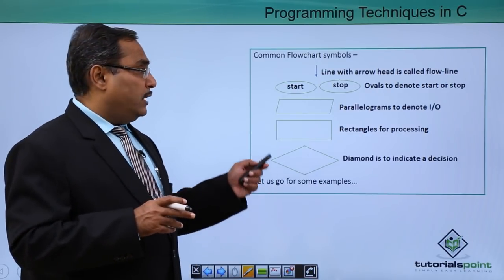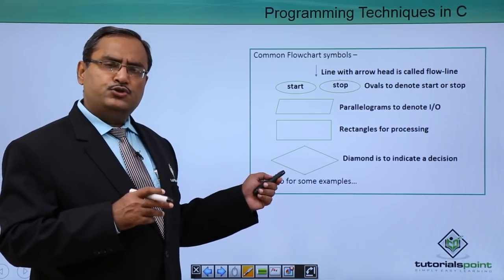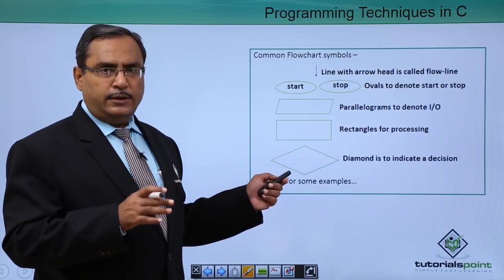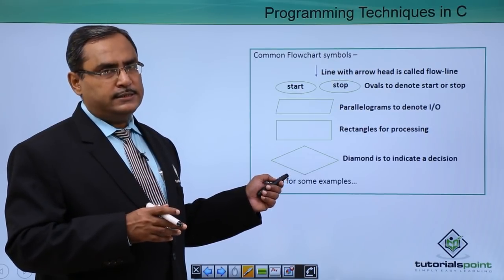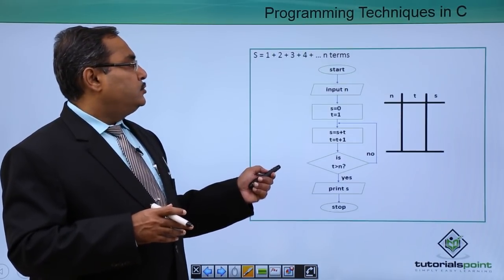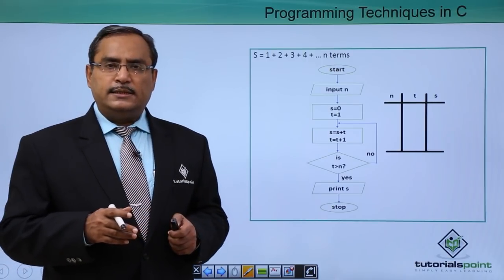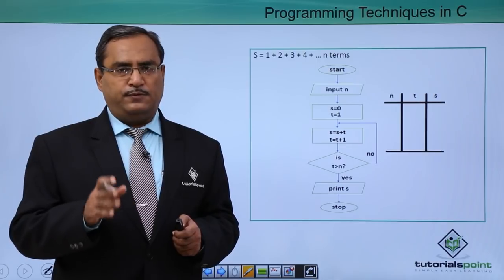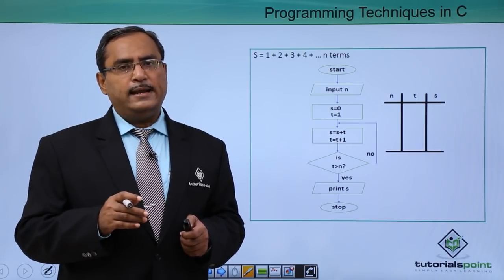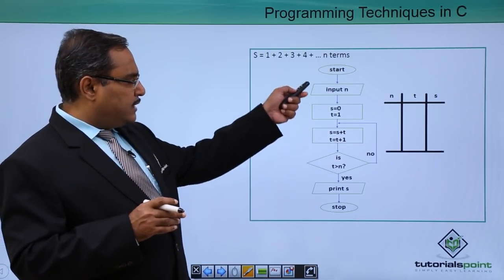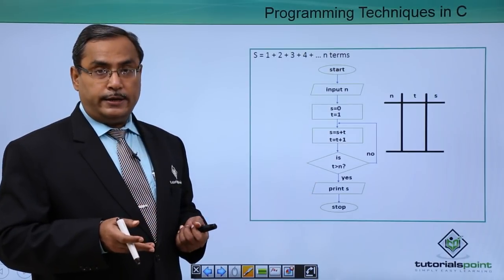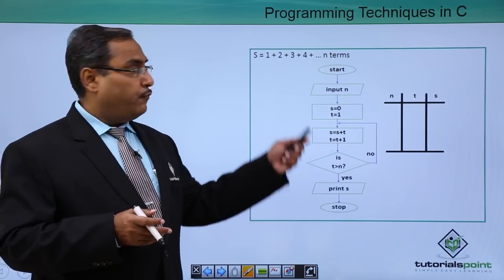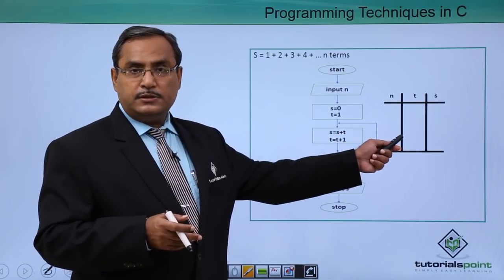Apart from these, there are many other flowchart symbols, but we concentrate on those needed for our next discussions. Let us consider the series: sum = 1 + 2 + 3 + 4 + … up to n terms. I have already written the respective flowchart and will trace its logic in a tracing table.